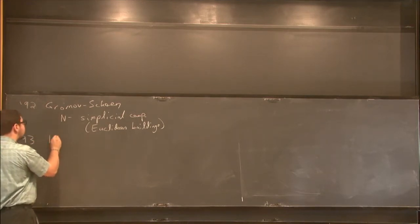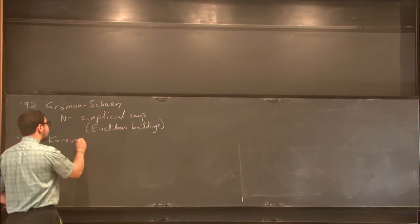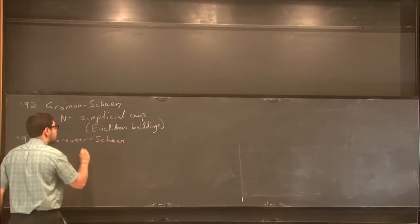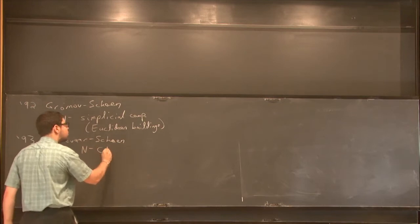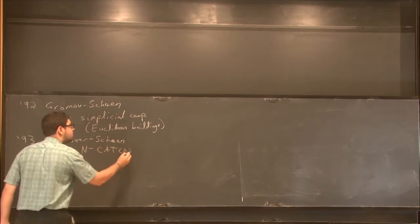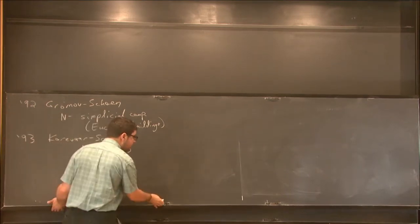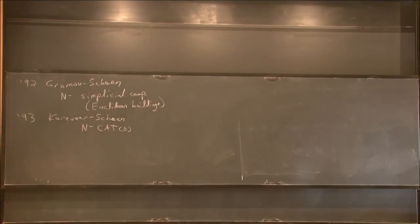In 93, Korovar and Shane extended the study to cat zero targets. These are targets, metric spaces with an upper curvature bound in the sense of Alexandrov, which I won't get into too much here. There's a lot of analysis that goes into the definition of energy in this case.